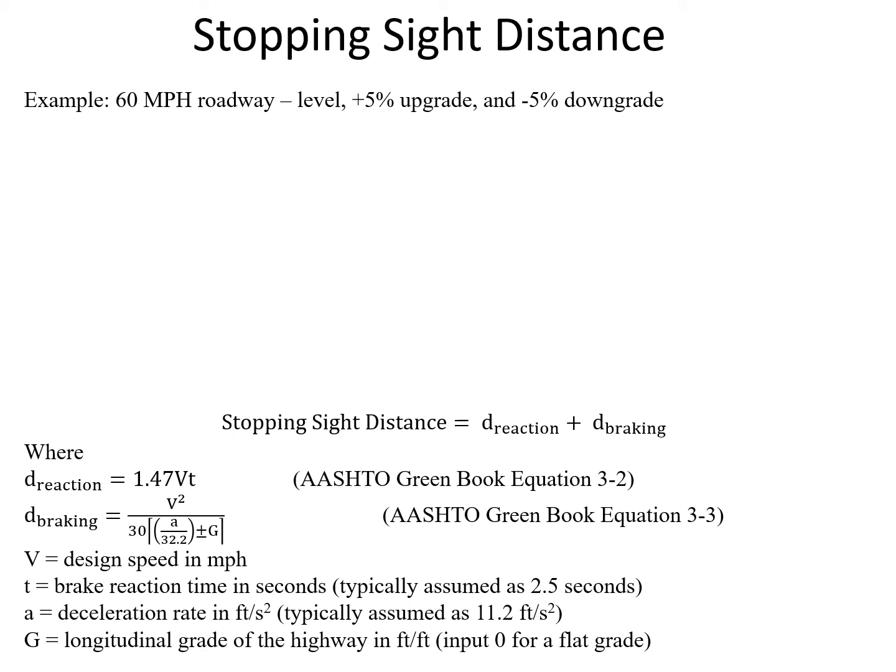Stopping sight distance is necessary to provide drivers the ability to see far enough in front of them to stop before hitting a stationary hazard in the roadway. We have a 60 mile per hour design speed roadway and we're going to look at three scenarios: one where the roadway is level, one where there's a 5% upgrade, and one where there's a 5% downgrade.